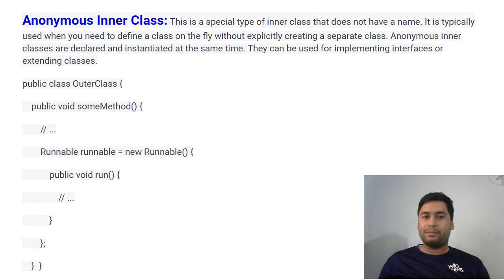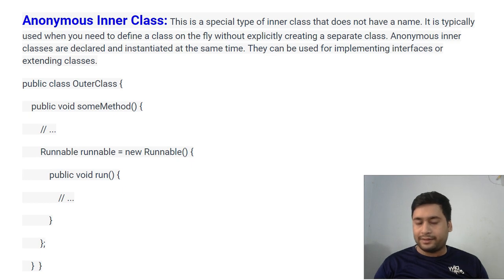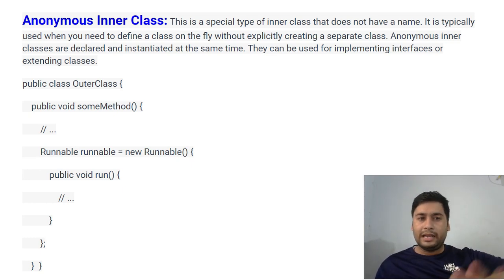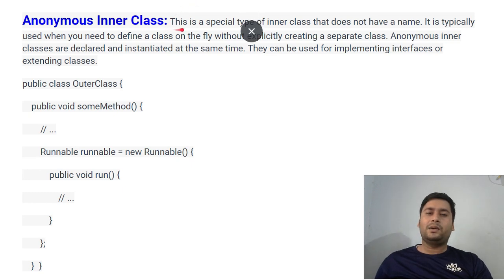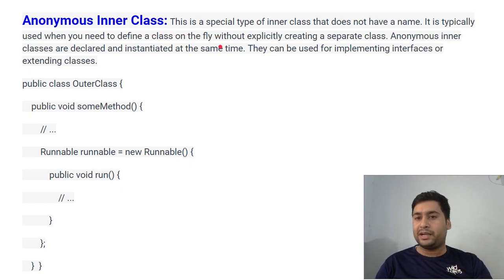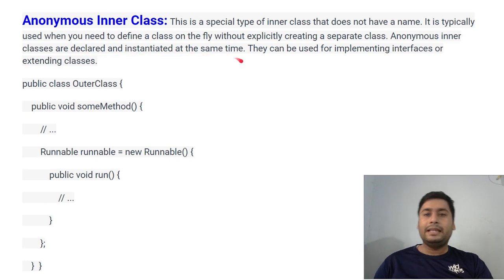Anonymous inner classes are very famous and very useful. In Java 1.8 we are not providing anonymous implemented classes anymore — we are going with lambda expressions or method references, which have replaced anonymous inner classes. An anonymous inner class is a special type of inner class that does not have a name. It's typically used when you need to define a class on the fly without explicitly creating a separate class. Anonymous inner classes are declared and instantiated at the same time.